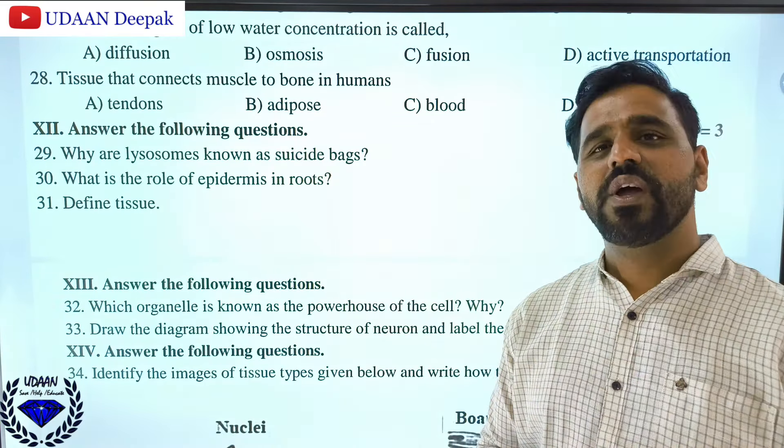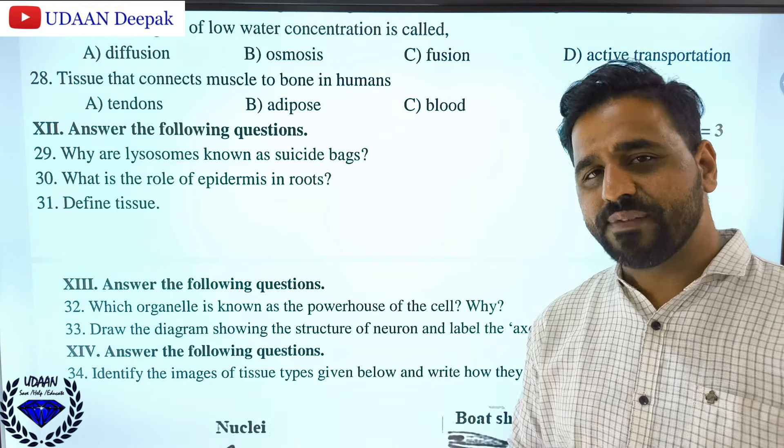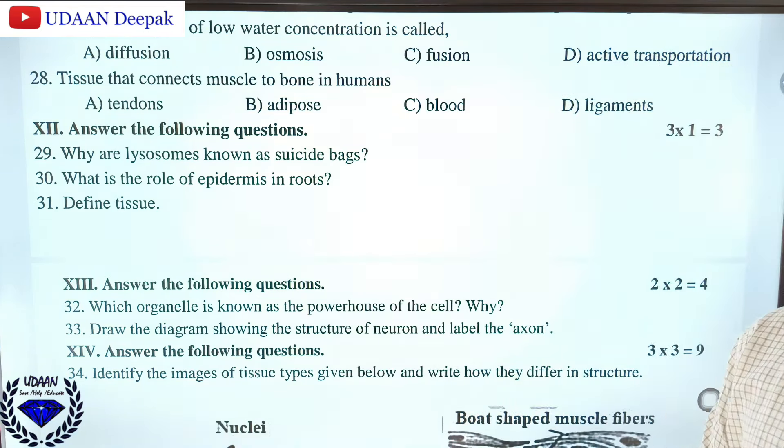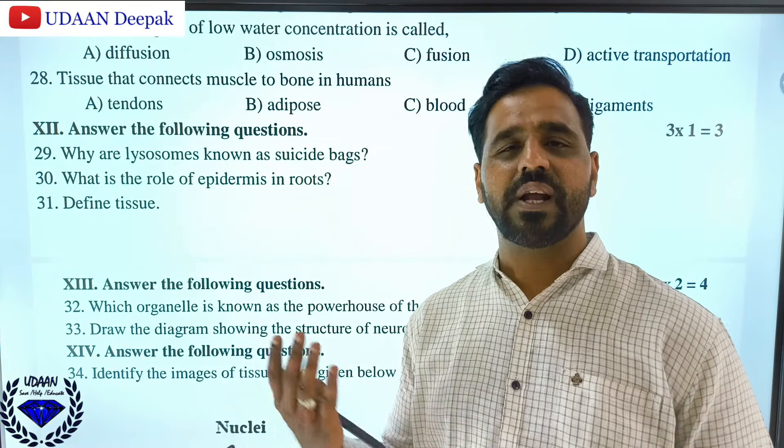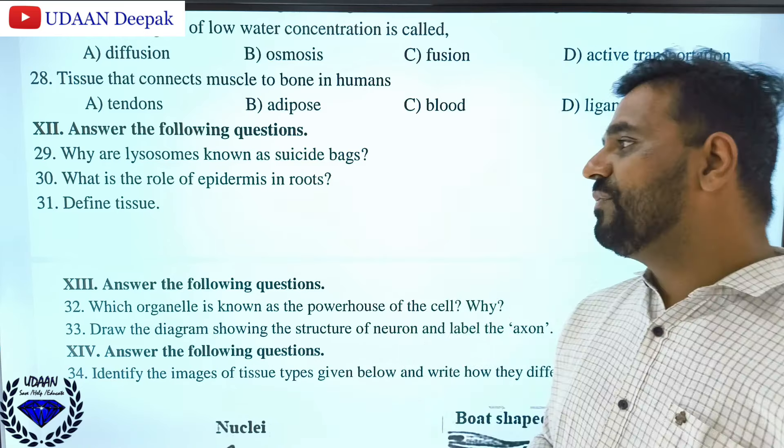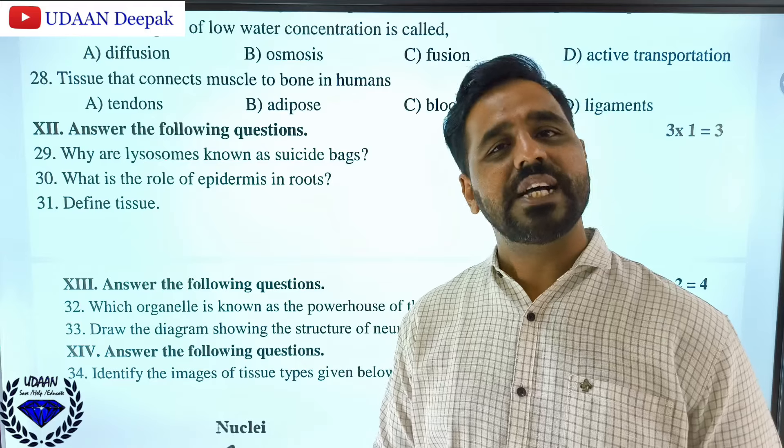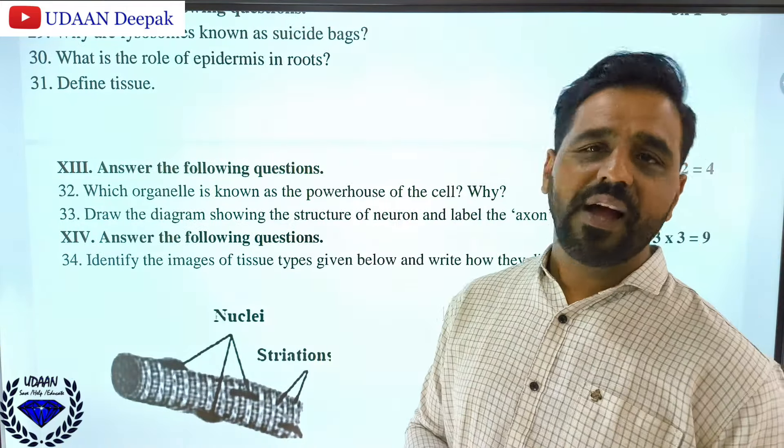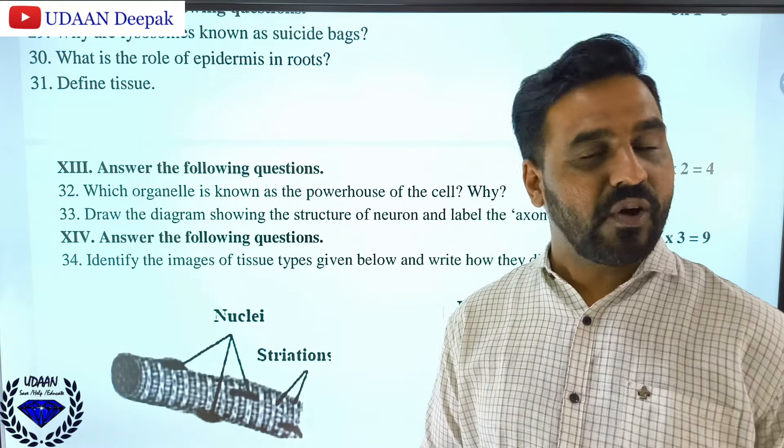What is the role of epidermis? The main role of epidermis is to protect. The outer covering of the plant body is called epidermis and its main function is protection. Define tissue: tissue is a group of cells which are specialized to perform a specific function. Which organelle is known as the powerhouse of the cell? Mitochondria, because it provides energy to all the organelles of the cell.